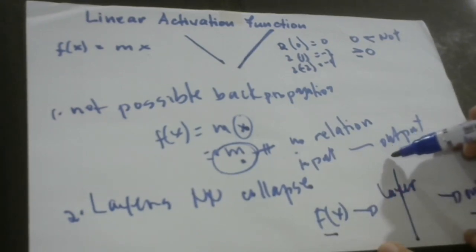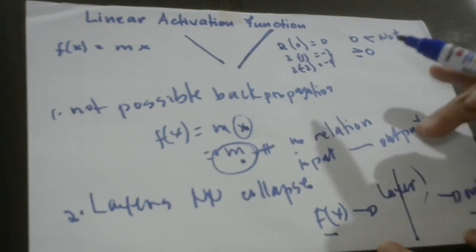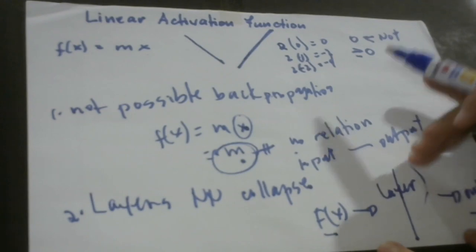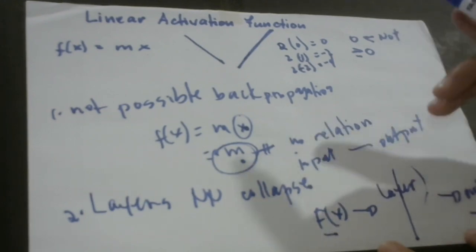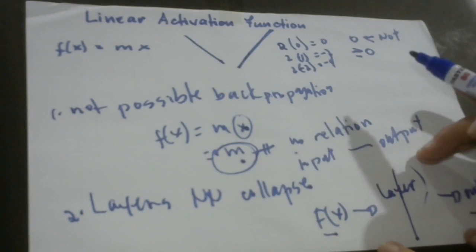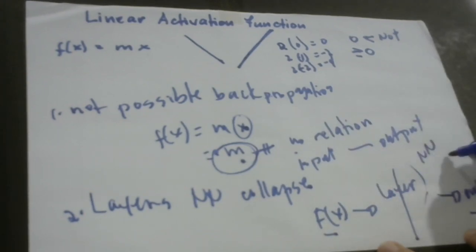So this means that the layers collapse. And this means that a linear activation function turns the neural network into just one layer.